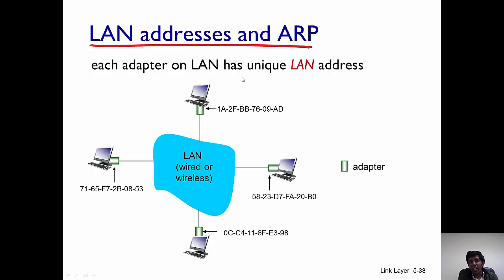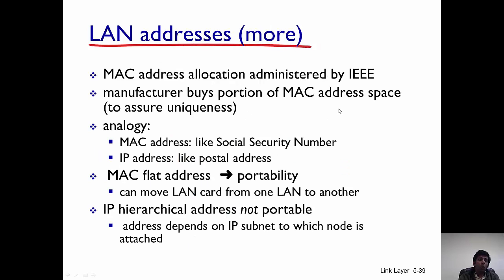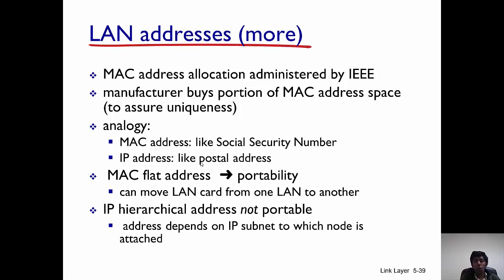Each adapter on the LAN has a unique address. MAC addresses are allocated by IEEE — each manufacturer of an adapter buys a portion of MAC addresses from IEEE and each device is provided a MAC address. MAC addresses are hard-coded; each device comes with a registered MAC address. Think of MAC addresses as social security numbers while IP addresses are like postal addresses. MAC addresses do not change — every device keeps the same MAC address.